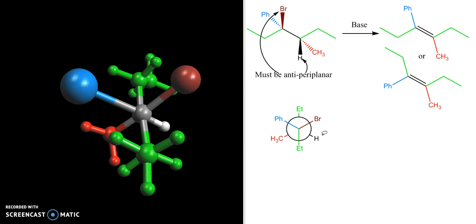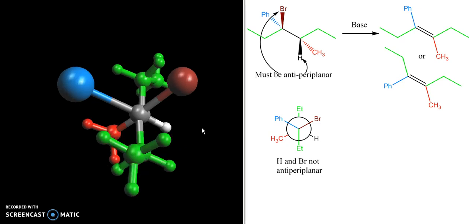And what you can see is the hydrogen and the bromine are not anti-periplanar to one another. In fact they're gauche in this conformation. And we can see that in the three-dimensional model as well. The bromine and the hydrogen are right next to one another.